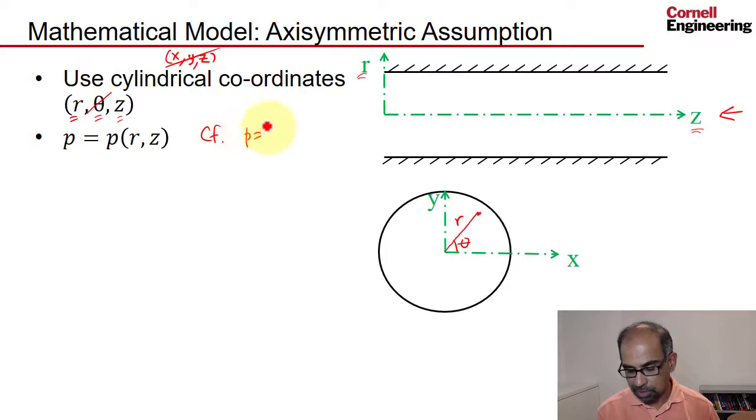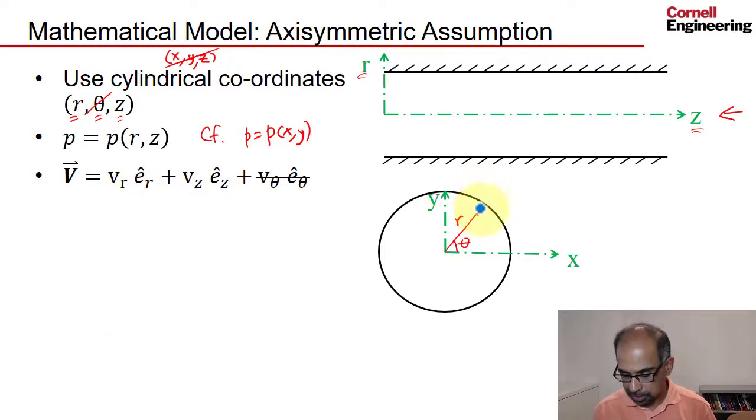So pressure, for instance, would vary only along the radial and axial coordinates. Compare that to when we make the usual 2D assumption where you would say p is a function of just x and y. So this is reducing it to a 2D problem, but not in the usual sense that we often do. The velocity we have to decompose into a radial component, the axial component, and a swirl component.